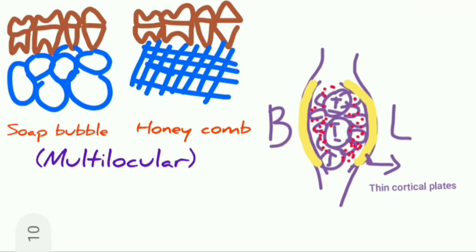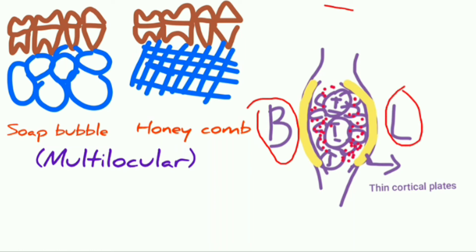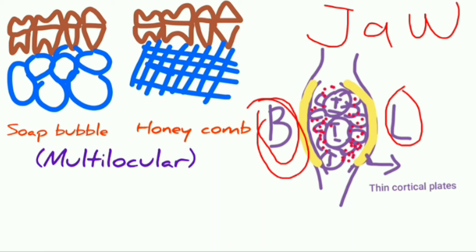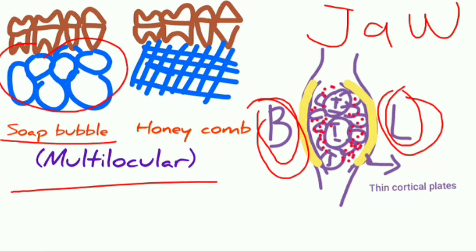As seen in this picture, the buccal and lingual cortical plates become thin due to expansion of the jaw bone, indicated by the yellow lining on both sides. The thinning of cortical plates is seen on both buccal and lingual sides. The multilocular lesion can be present in a soap bubble pattern or a honeycomb pattern with very small net-like structures.